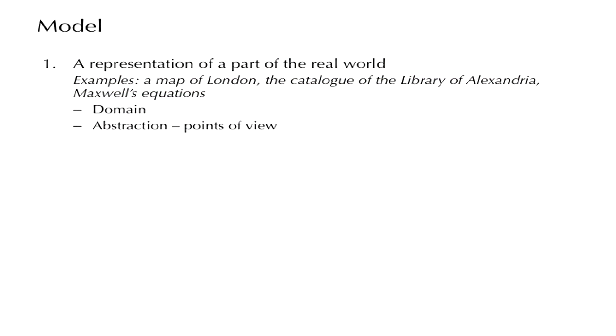We need to understand what a model is. A model, we use the term model in order to mean some representation of a part of the real world. For instance, a map of London, or the catalog of the Library of Alexandria, or Maxwell's equations. These are models of specific parts of the world, and the part of the world that a model describes is called the domain that we are interested in. The important point is that a model describes a part of the world by throwing away a lot of information that is unnecessary. So it is an abstract representation, and the abstraction is made from one or several points of view, and the points of view determine exactly what information we keep and what we throw away.